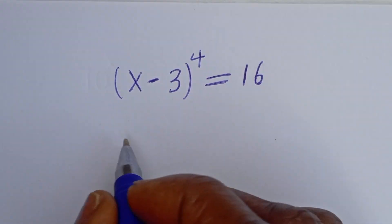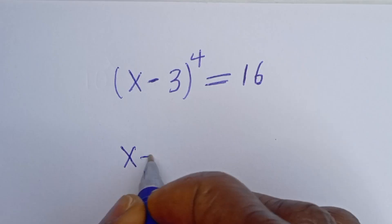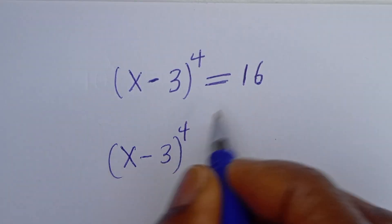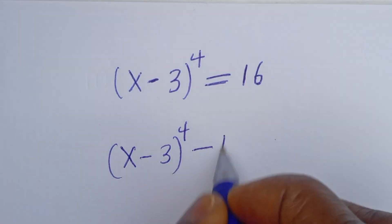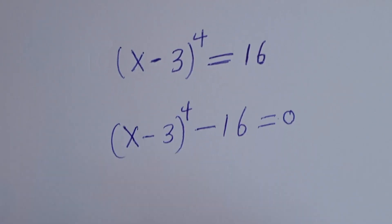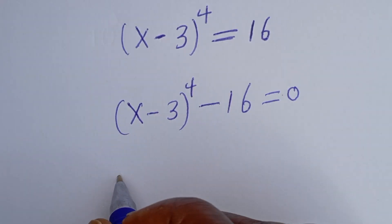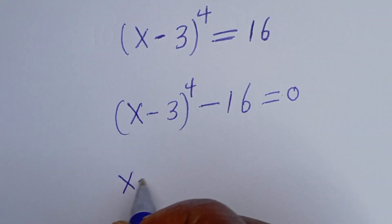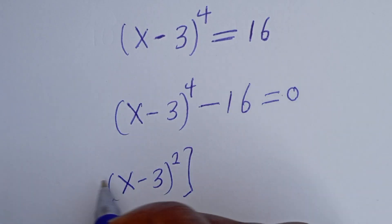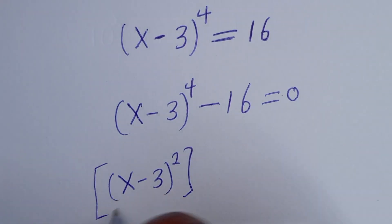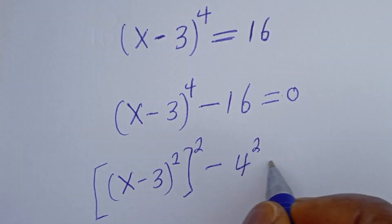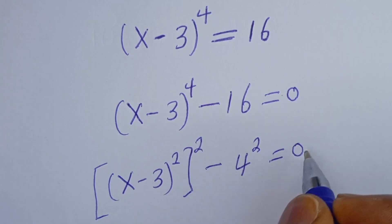We have S minus 3 to the power of 4. If you take 16 to this side, minus 16 is equal to 0. Now this can be written as S minus 3 squared, and minus 16 can be written as 4 squared, so the equation becomes S minus 3 squared minus 4 squared is equal to 0.